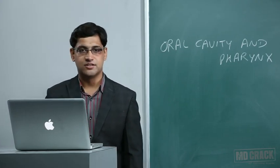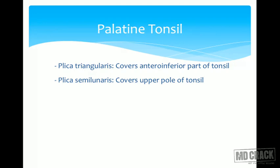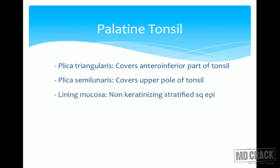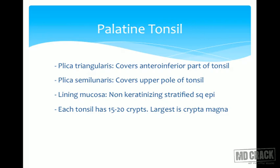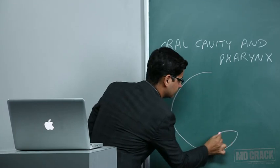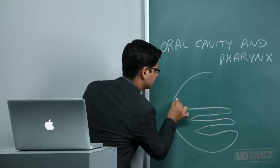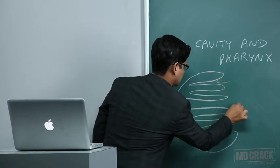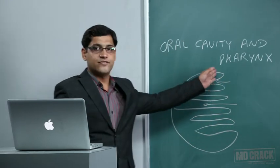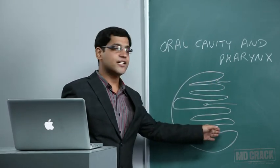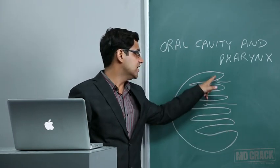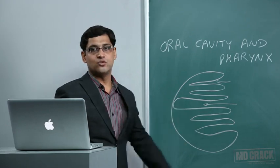Regarding palatine tonsils: plica triangularis covers the anterior inferior part of the tonsils, and plica semilunaris covers the upper pole of the tonsils — these are mucosal folds. The lining mucosa of the tonsil is non-keratinizing stratified squamous epithelium. Each tonsil has around 15 to 20 crypts visible on the medial surface.